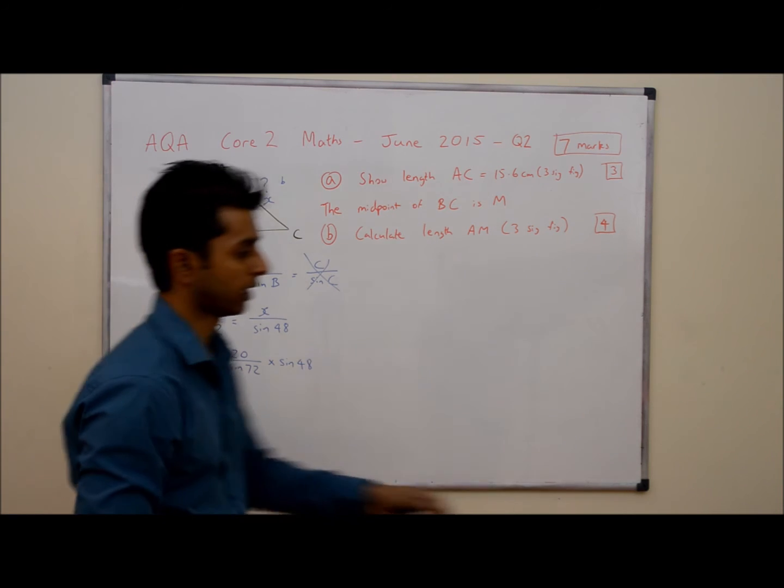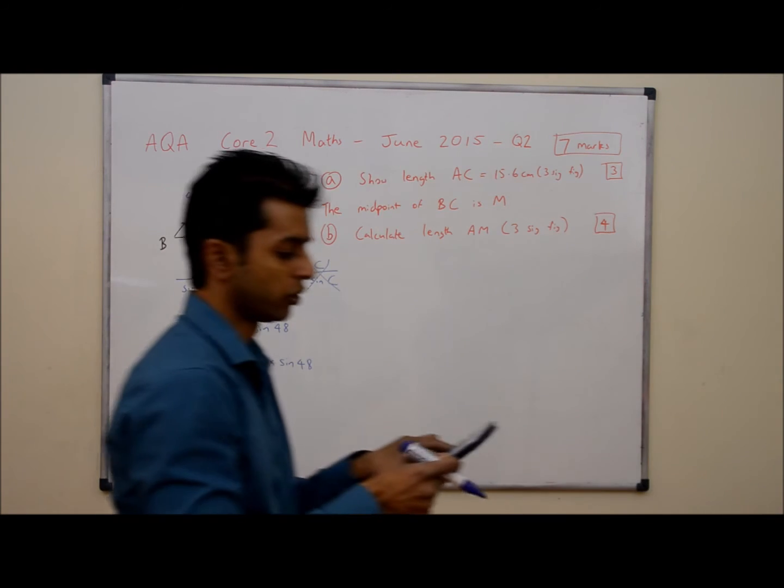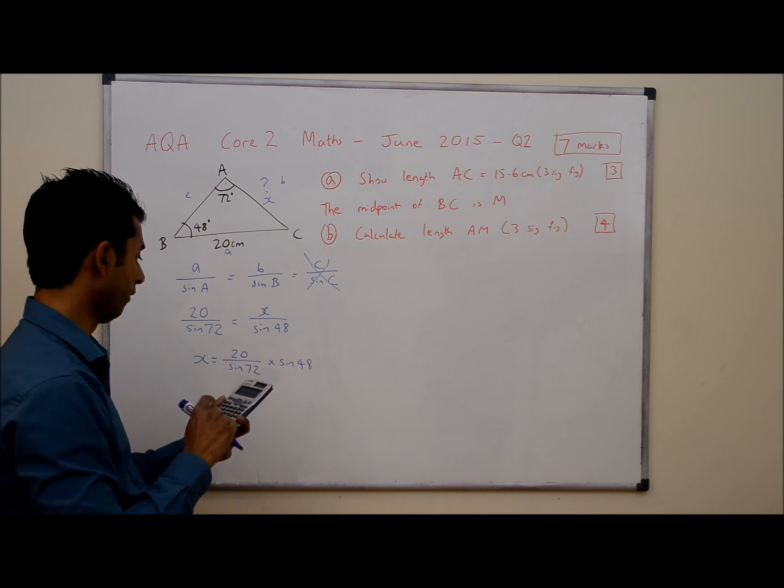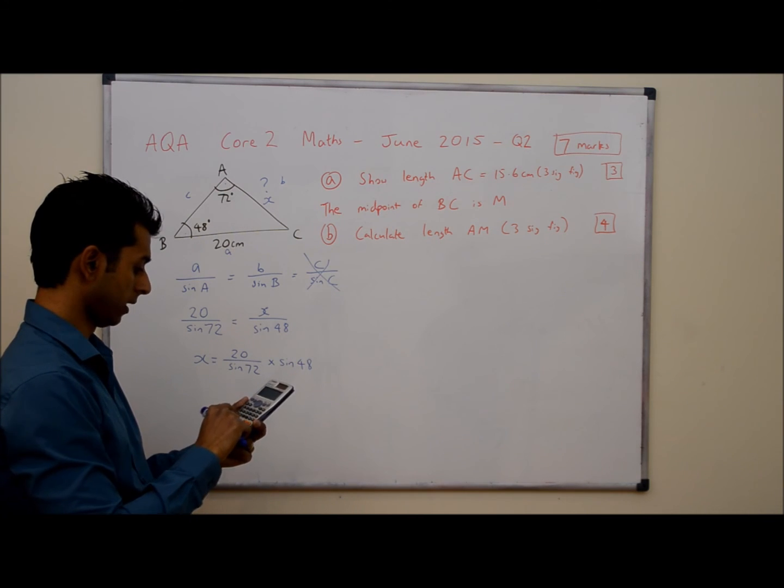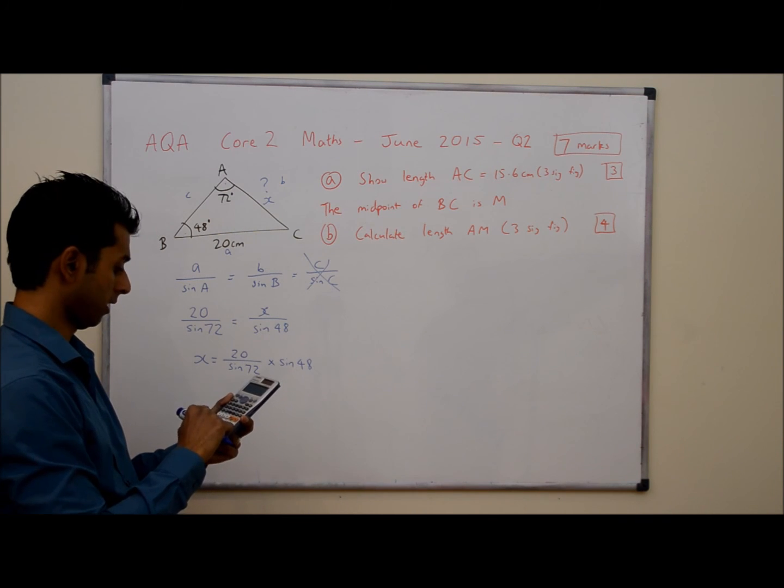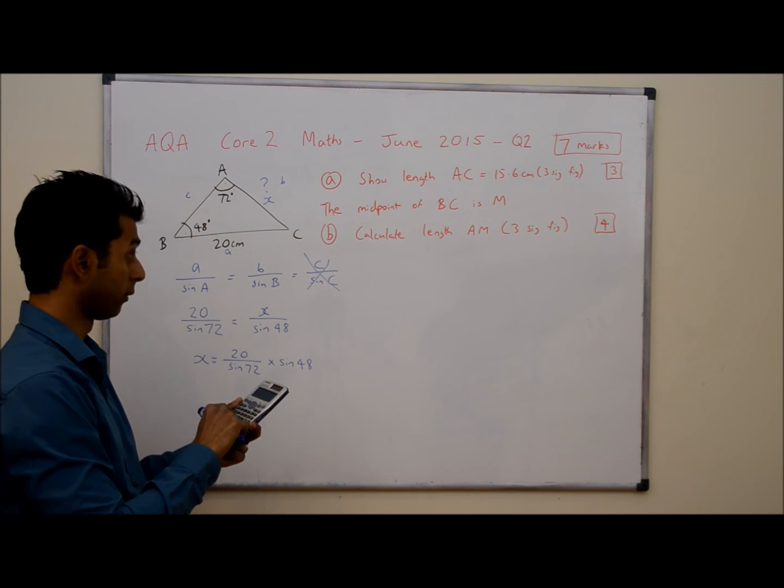We get our calculators. Ensure that you are in degree mode for this. We're going to type in 20 divided by sine 72 multiplied by sine 48 and hopefully we'll get that answer.